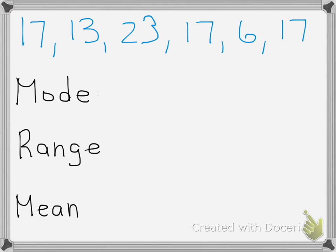The mode in a set of numbers is the most occurring number. In this case, 17 appears three times in this set. The answer to mode is 17.